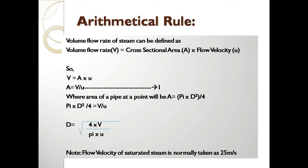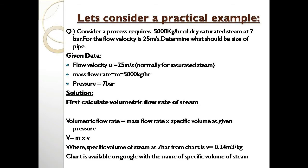The velocity range for saturated steam is from 25 to 40 meters per second, but we normally take 25 m/s for dry saturated steam. Now let's consider a practical example: a process requires 5000 kg per hour of dry saturated steam at 7 bar, with a flow velocity of 25 m/s. Determine the required pipe size.